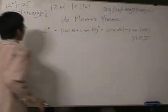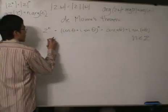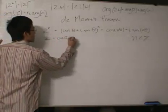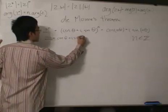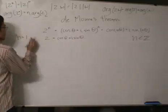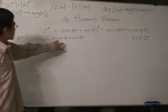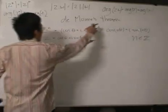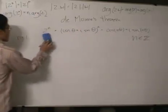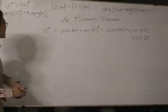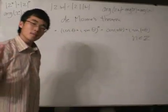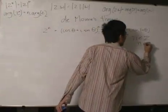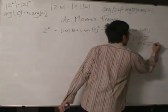We'll prove for n equal to 1 first. If n is equal to 1, we get z equals cosine theta plus i sine theta — we put 1 in for n and that's the result we have. So this is true for n equal to 1. Now we move on to n being a positive integer.